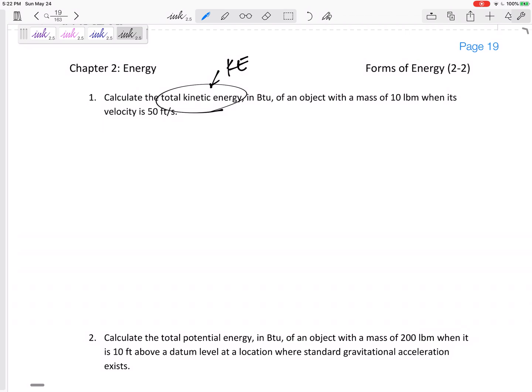We're wanting to calculate the total kinetic energy, capital KE. My equation is one half mv squared. So I've got one half m - it tells us that the mass is 10 pound mass, our units are going to be real interesting here - and its velocity is 50 feet per second, and I'm squaring that velocity.